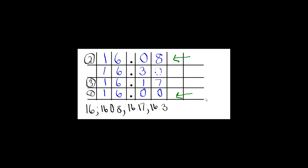And so that is how we could use a place value chart to put numbers in order from least to greatest, or fastest to slowest.